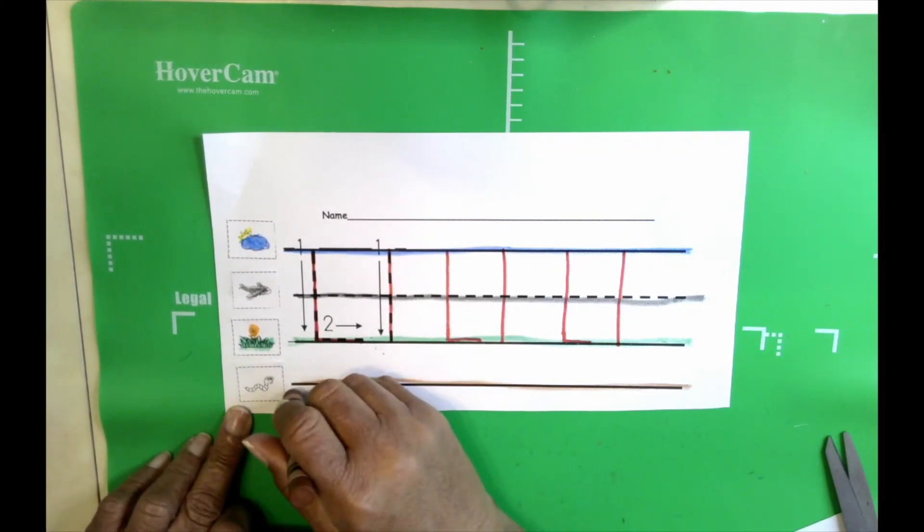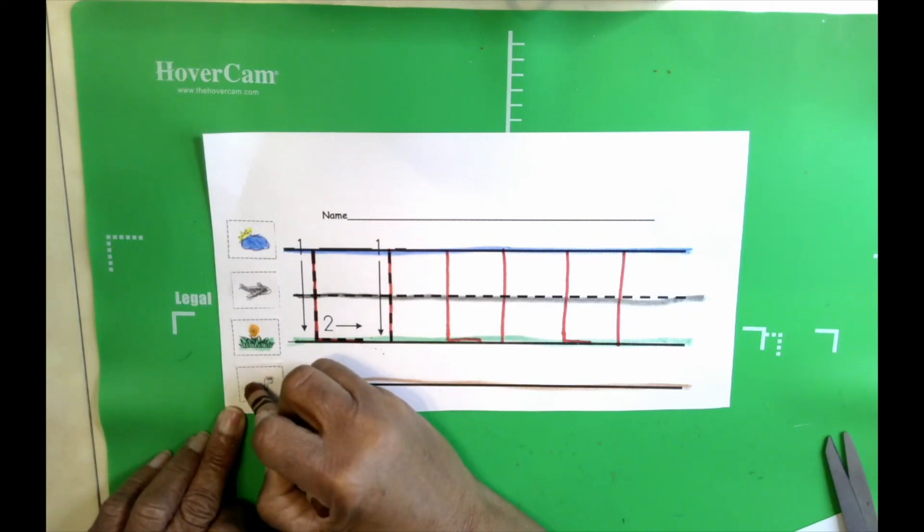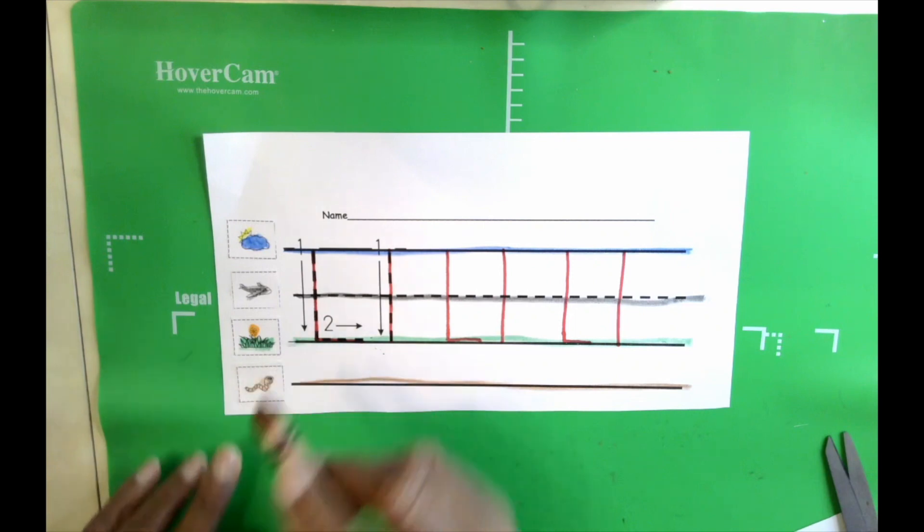The last line. The worm line. We're going to color this little guy brown. And that's it, boys and girls. Great job. See you next time. Bye-bye.